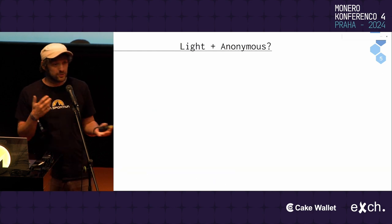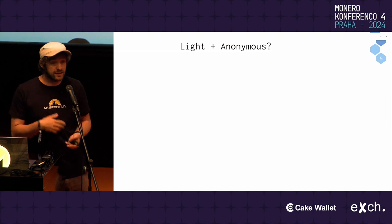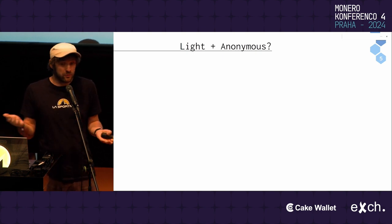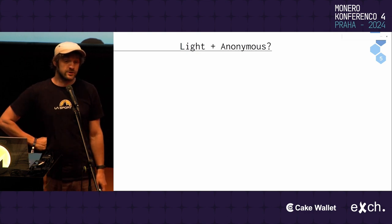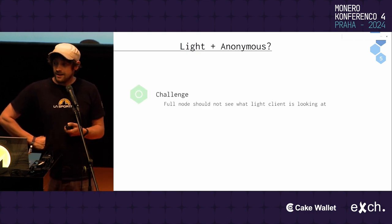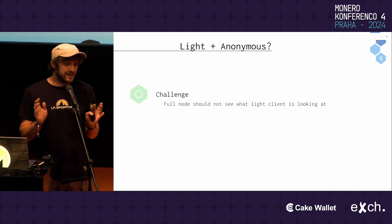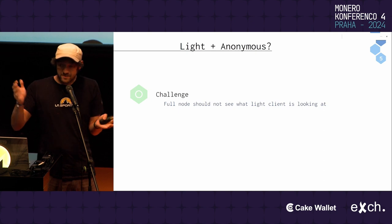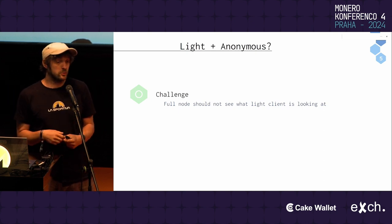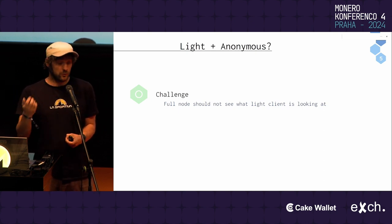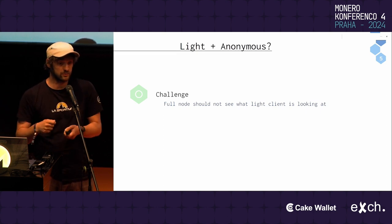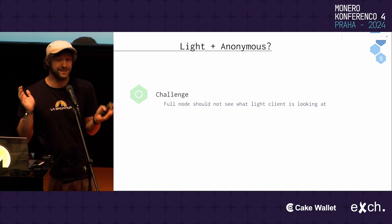We have these two design goals: we would like to have support for light clients, and we want to have anonymous payments. Ideally we'd like to have both. This is the question this talk deals with. The challenge is that when we say we want anonymity, we don't just mean anonymity against some outside adversary — we want anonymity even towards the full node through which we interact with the blockchain. We want anonymity in a complete sense.